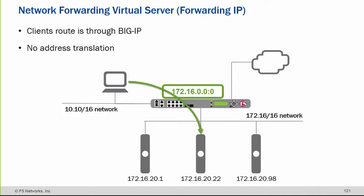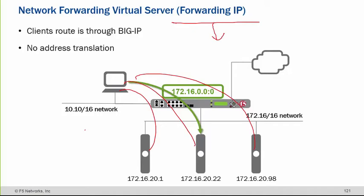When you are talking about the forwarding virtual servers, it means it will allow all traffic. So from this subnet, you can access this, this, and this based on the forwarding IP virtual server. Forwarding IP virtual server means all the subnets, all the IPs within the subnet will be allowed, and this says all ports. So all will be allowed.